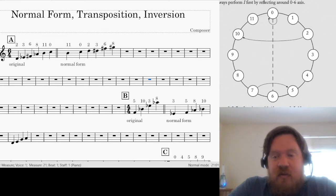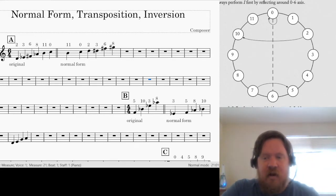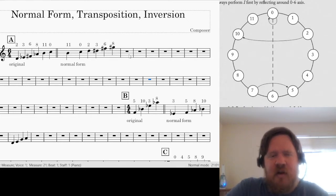11 becomes 1. If we invert 10, B-flat, it becomes 2. If we invert 9, it becomes 3. So just go straight across the clock like that. You can think of it as just an inversion around this axis, and how far away each note is from C, then we go the opposite direction. So let's do a couple of these.